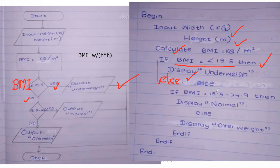What we are doing is: if BMI is less than 18.5, then we check the right range up to 24.9 — that is normal.